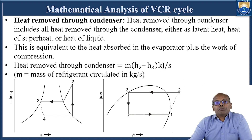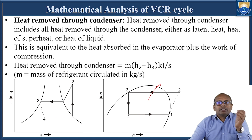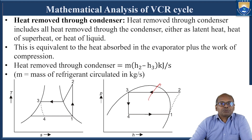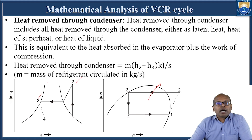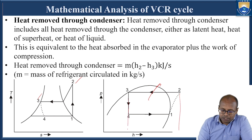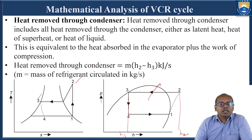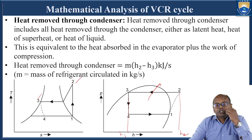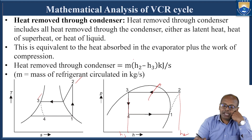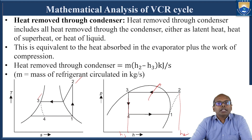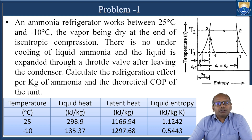The final parameter is heat removed through the condenser. This is nothing but the change in enthalpy during the condensing process from point 2 to point 3, given by H2 minus H3, where H2 is on the higher side and H3 is on the lower side. Multiplying by mass flow rate gives heat removed through the condenser in kJ/s. Now we will see two problems to wind up this session.